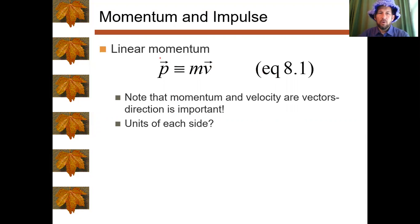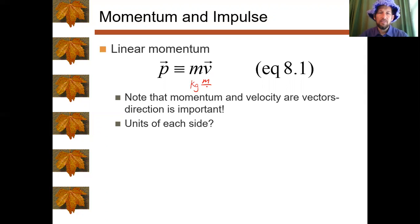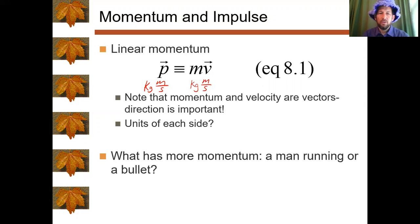In any equation, the units of the left side and the right side have to be exactly the same. We have kilograms on one side, and velocity has units of meters per second, so the units of momentum are kilogram meters per second.